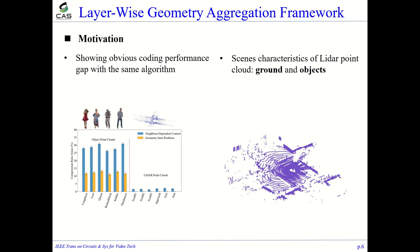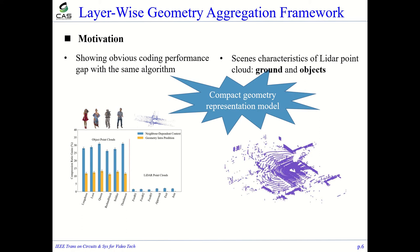So it is better to design a compact geometry representation model. Moreover, there are some common characteristics of LiDAR point clouds in different scenes. This scenario involves two key elements: a ground layer and objects independently located at large-scale space.